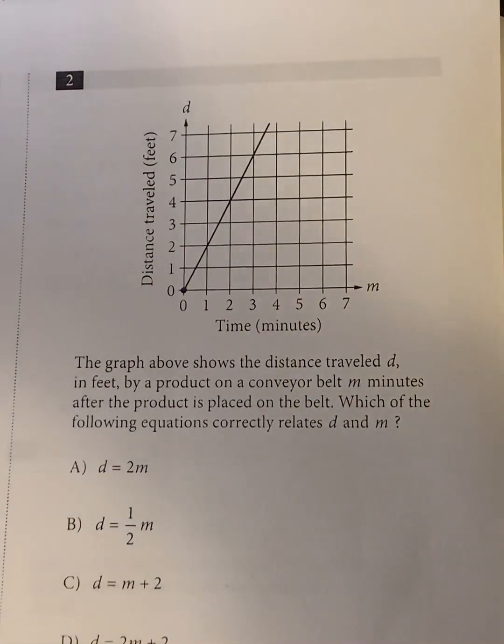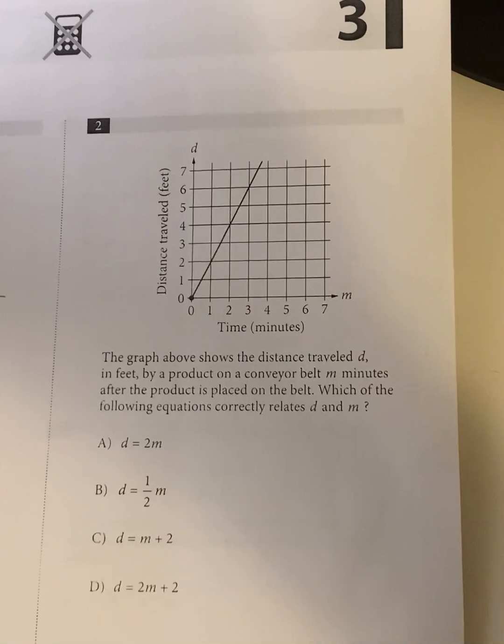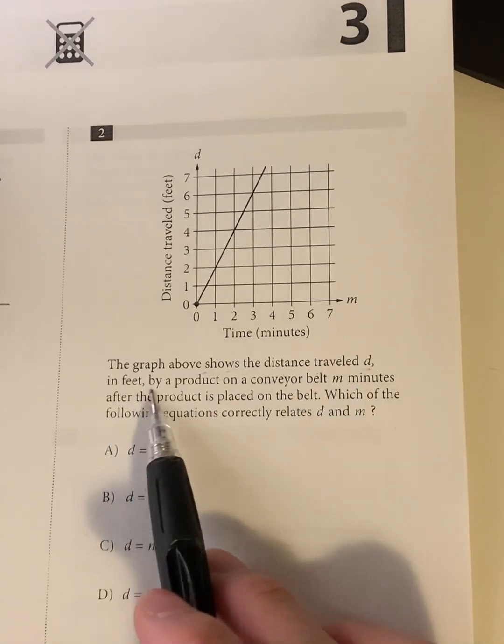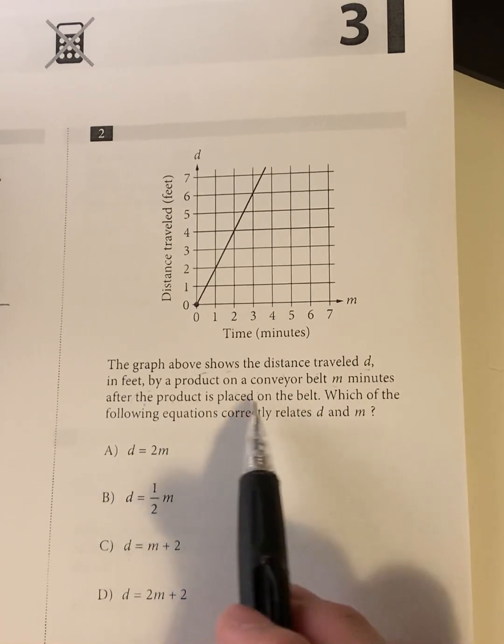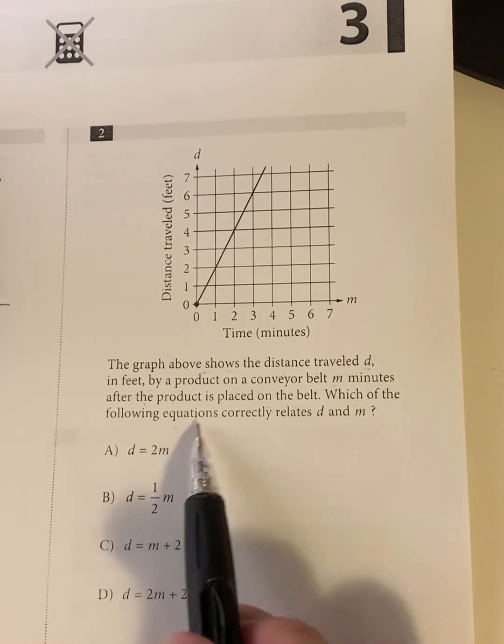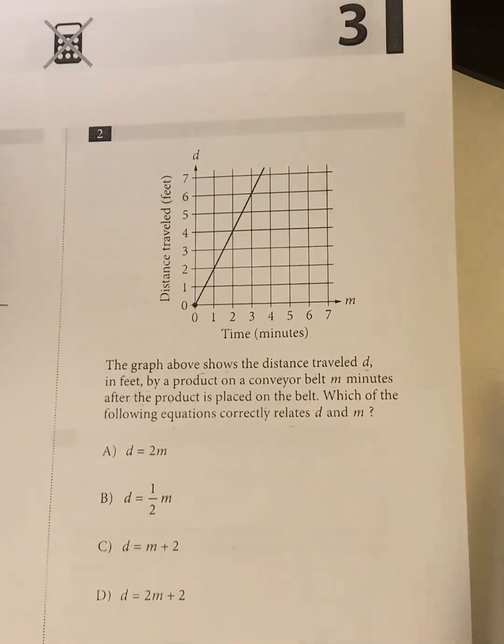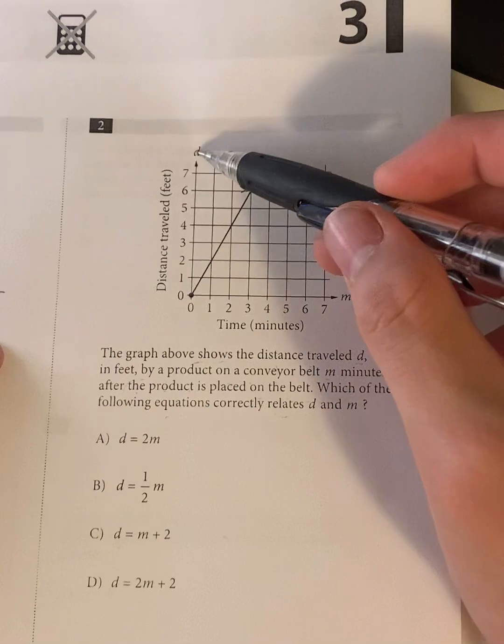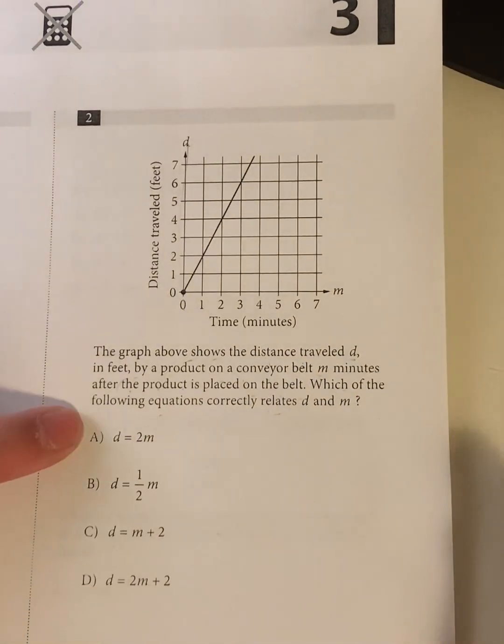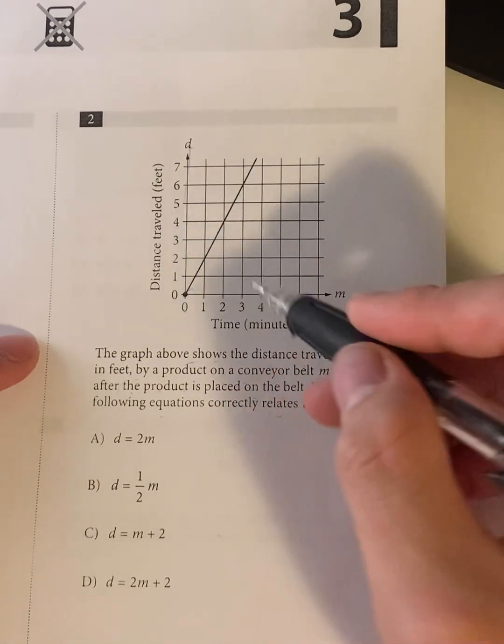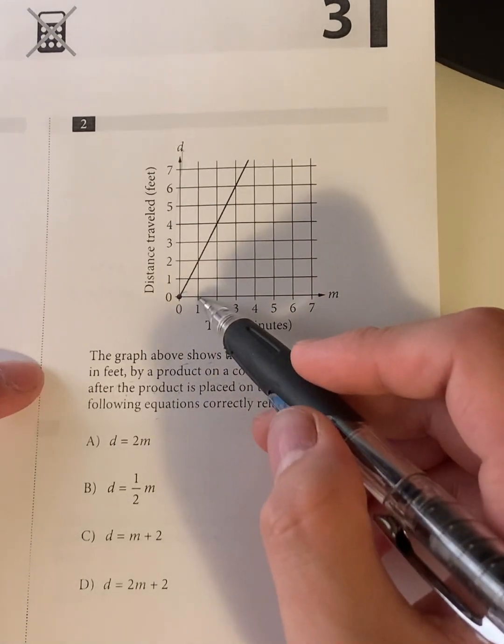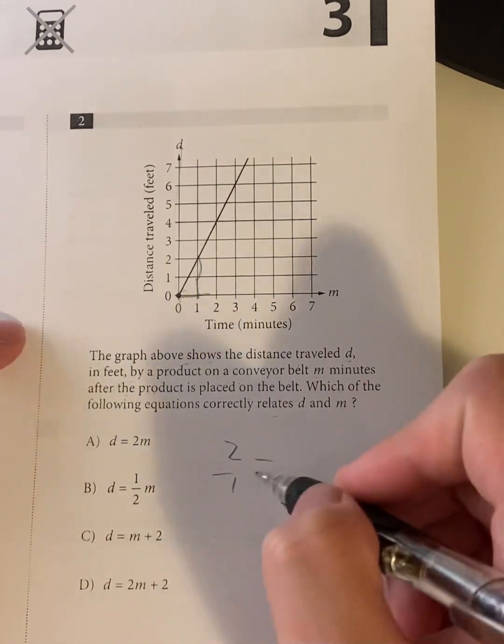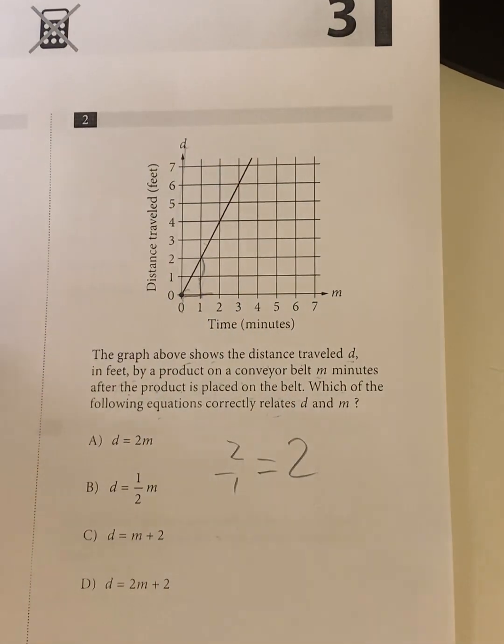So moving on to question 2. The graph above shows the distance traveled d in feet by a product on a conveyor belt m minutes after the product is placed on the belt, which of the following equations correctly relates d and m. So basically, we have to find the equation. Where d is our y value. So basically, what is the slope? The slope is calculated rise over run. So how much does it rise? Rise is 1, 2 over run, which is 1. So the slope is 2 over 1, which is basically 2. So which of the following have a slope of 2?